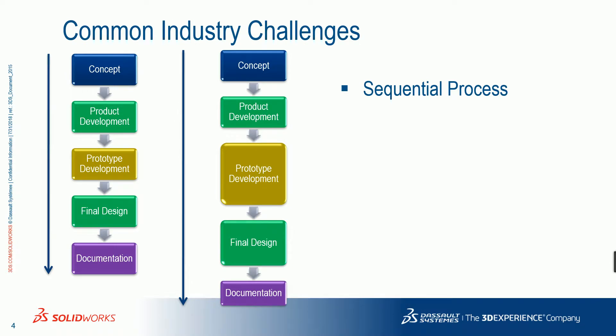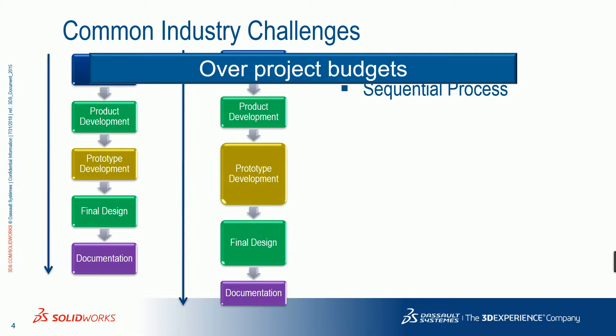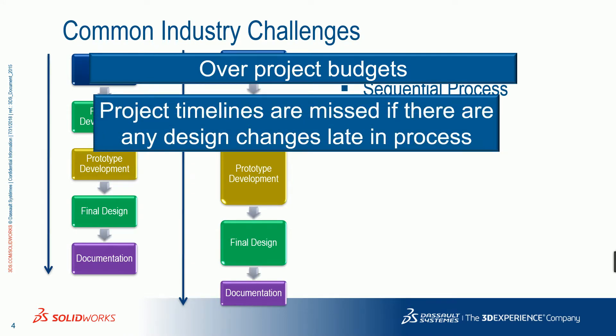Common industry challenges include over-running project budgets, because indirect costs spent on creating technical documentation and marketing content are high. Also, once project timelines are missed due to design changes — if any design changes occur after the project is finalized — you need associativity between the design and the marketing content to update automatically, otherwise you must spend time making all those changes manually.